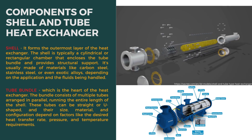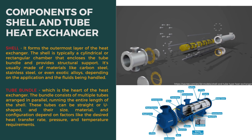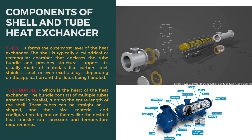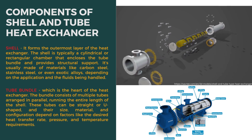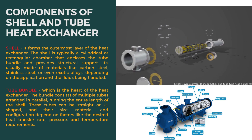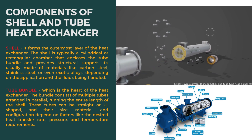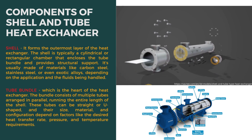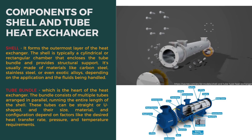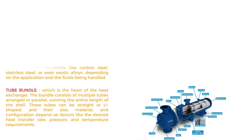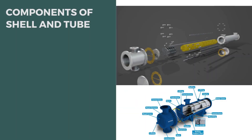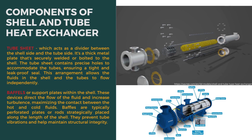Inside the shell, we have the tube bundle, which is the heart of the heat exchanger. The bundle consists of multiple tubes arranged in parallel, running the entire length of the shell. These tubes can be straight or U-shaped, and their size, material, and configuration depend on factors like the desired heat transfer rate, pressure, and temperature requirements.